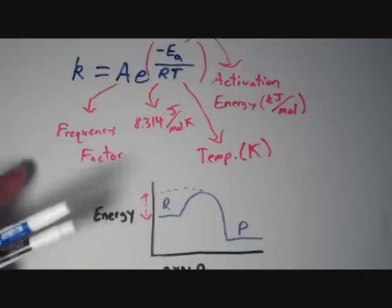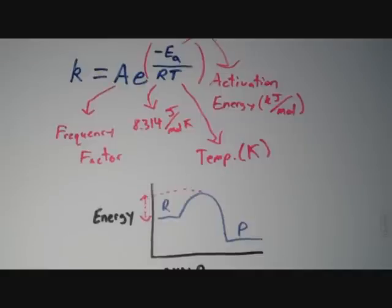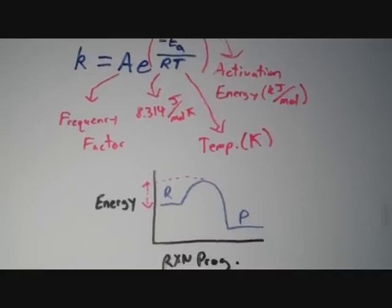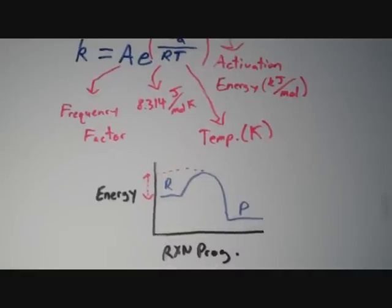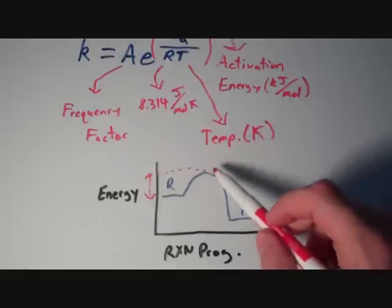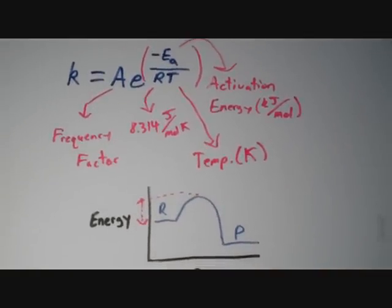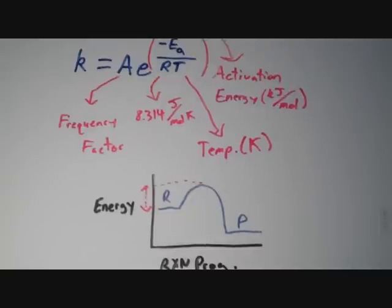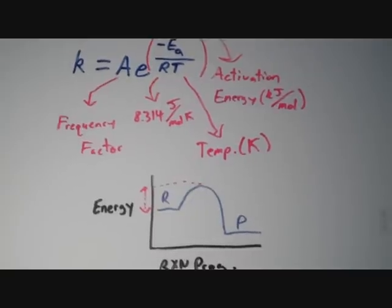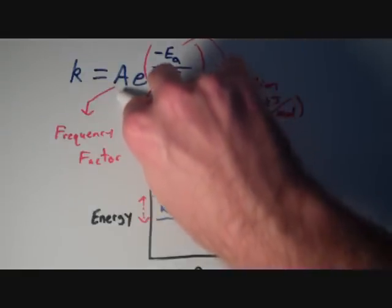And the frequency factor A, you can sort of think of the frequency factor as just a number that represents the approaches that the reactants take towards reaching this activation energy barrier. So just because we approach the activation energy barrier doesn't mean that we have surmounted it. And basically, that's what this parameter A is meant to measure.